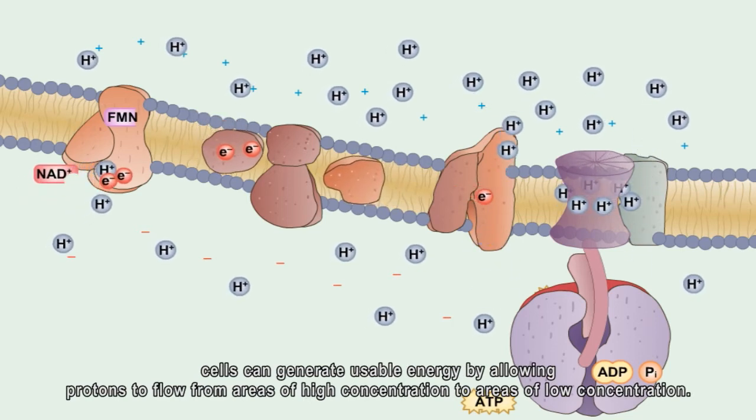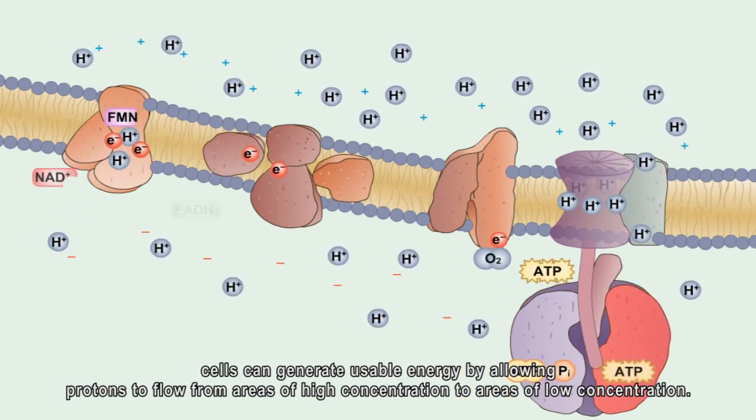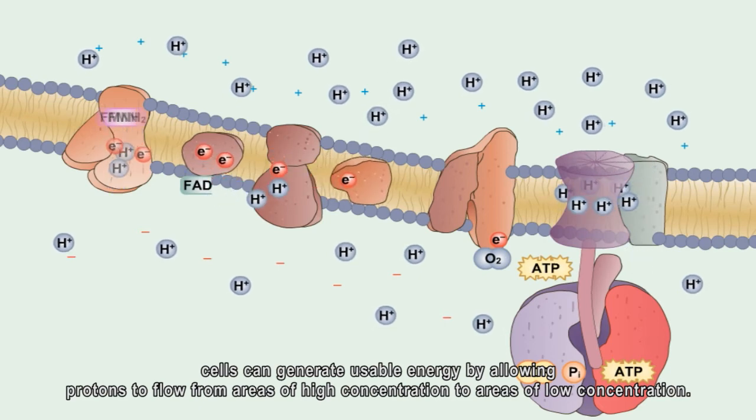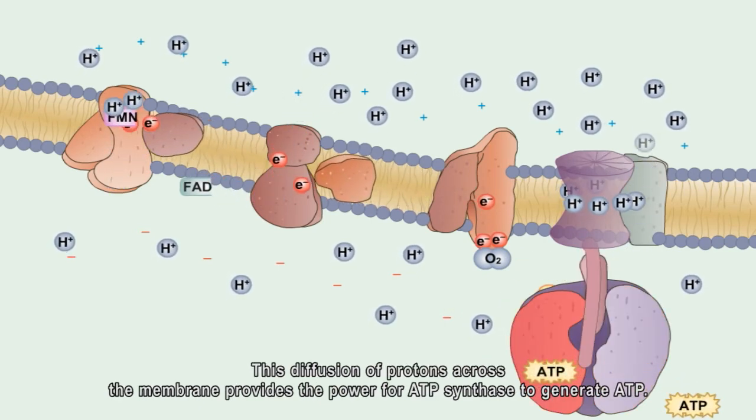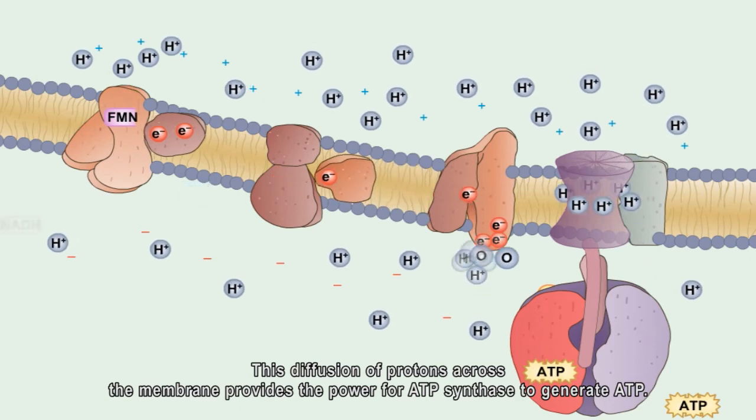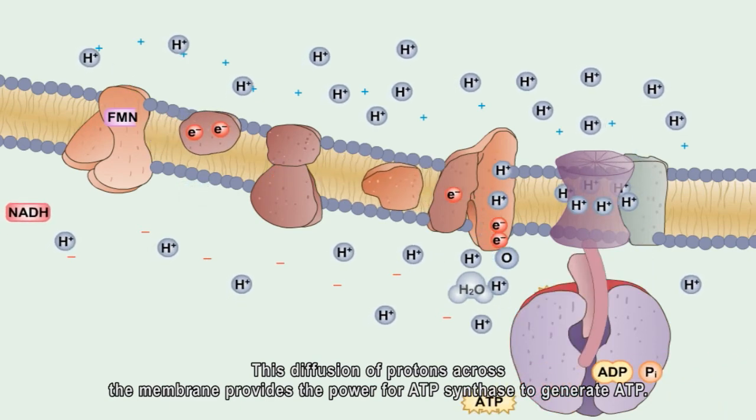cells can generate usable energy by allowing protons to flow from areas of high concentration to areas of low concentration. This diffusion of protons across the membrane provides the power for ATP synthase to generate ATP.